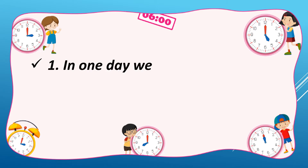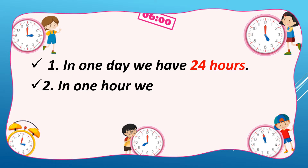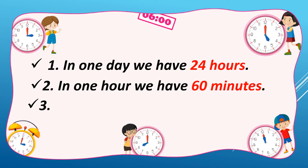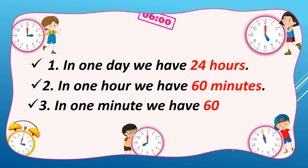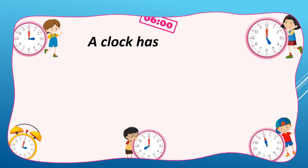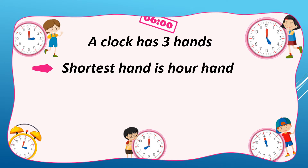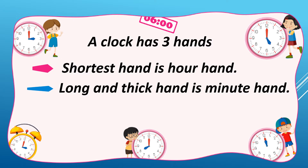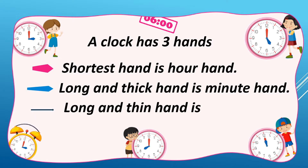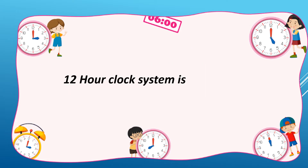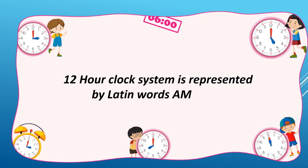In one day we have 24 hours. In one hour we have 60 minutes. In one minute we have 60 seconds. A clock has three hands. The shortest hand is the hour hand. The long and thick hand is the minute hand. The long and thin hand is the second hand. The 12-hour clock system is represented by the Latin words AM and PM.